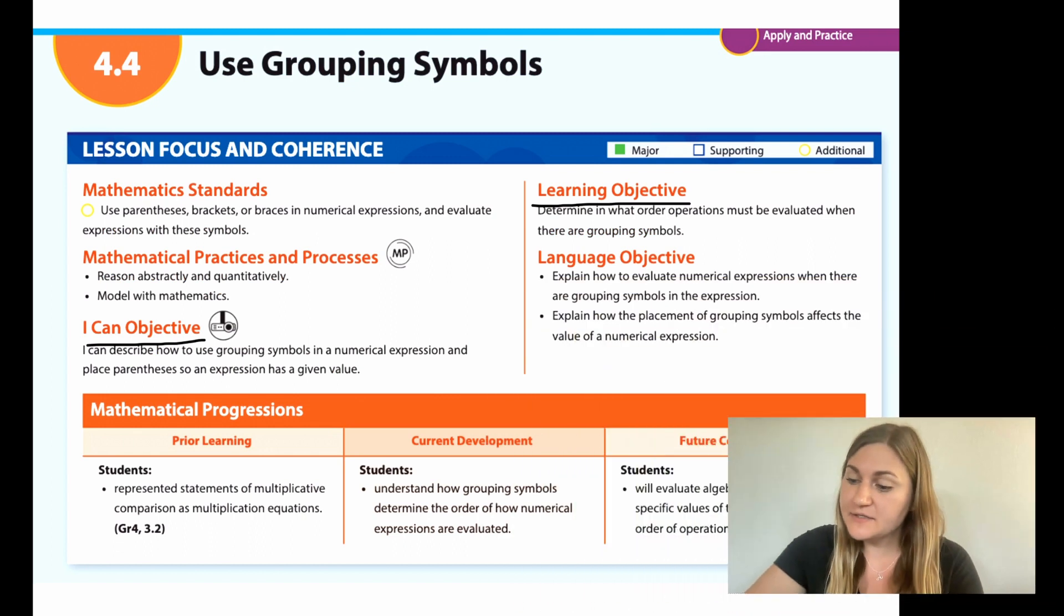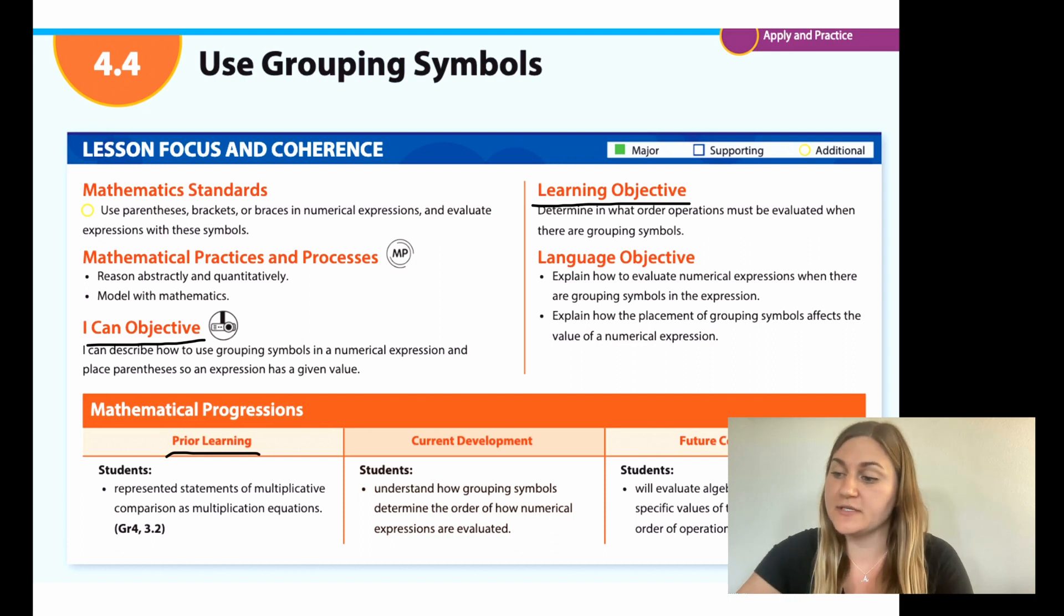Hi, I'm Natalie Rhodes, and this is IntoMath's 5th grade, Module 4, Lesson 4. I'm going to start off by going over the I can objective. It says I can describe how to use grouping symbols in a numerical expression and place parentheses so an expression has a given value. The learning objective says determine in what order operations must be evaluated when there are grouping symbols. The prior learning says students represented statements of multiplicative comparison as multiplication equations.